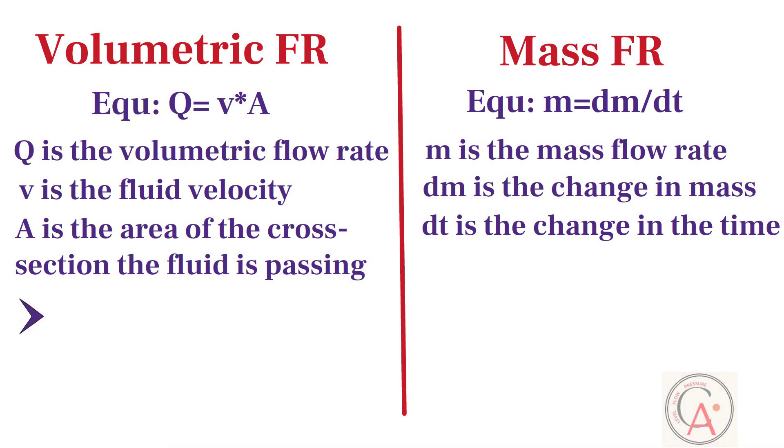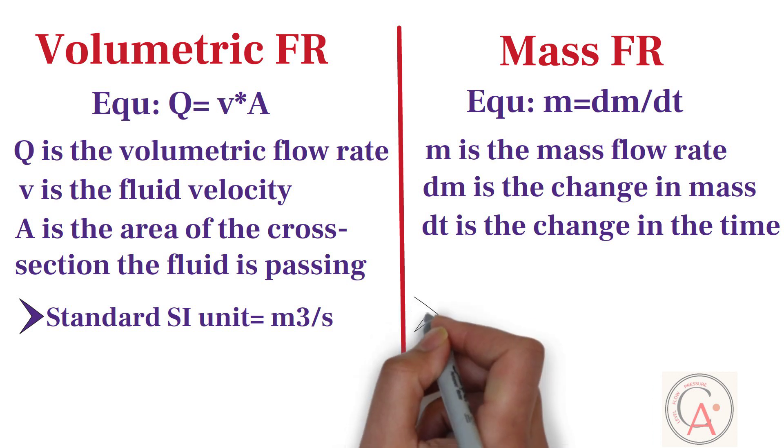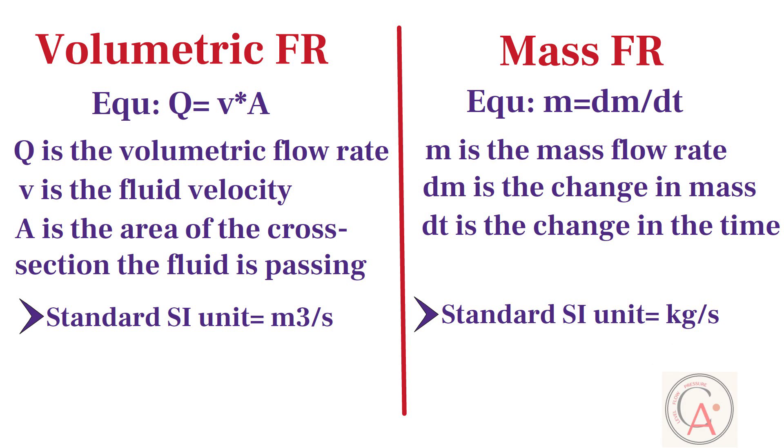Cubic meter per second is the standard SI unit of volumetric flow rate. And kilogram per second is the standard SI unit of mass flow rate.